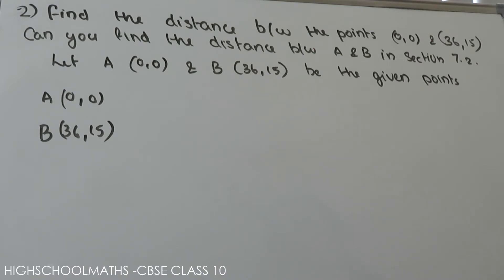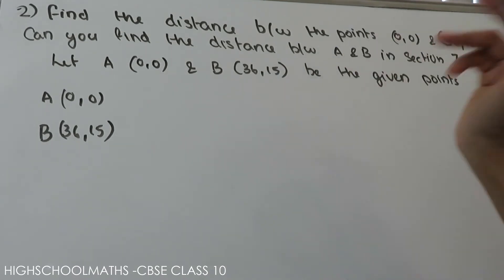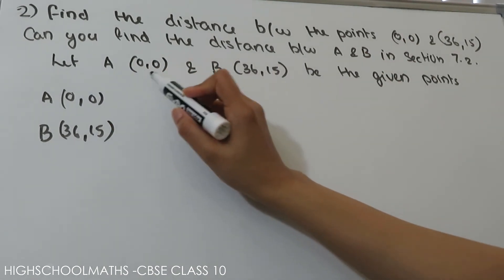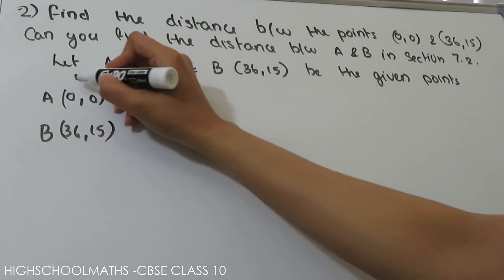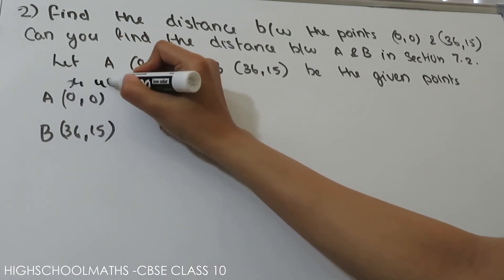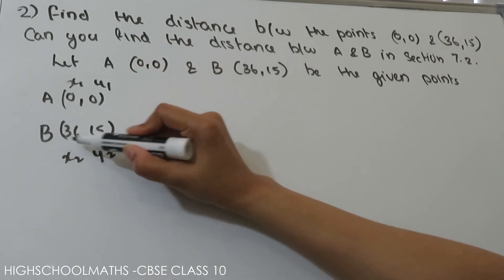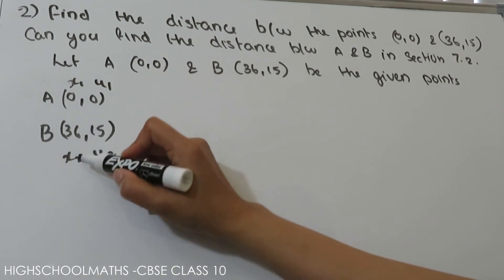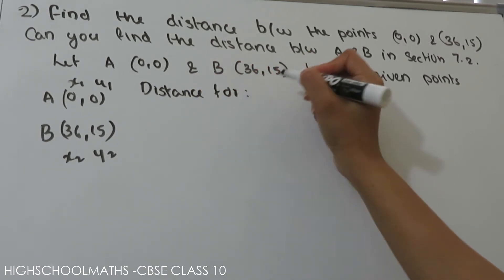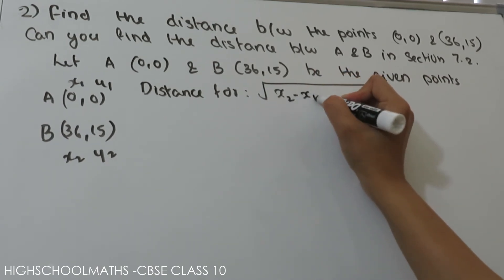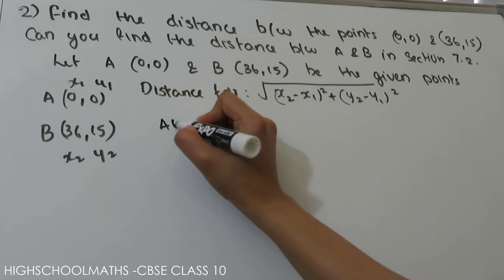Question number 2: Find the distance between the points (0, 0) and (36, 15). Let A be (0, 0) and B be (36, 15) as the given points. Assign x1 equals 0, y1 equals 0, x2 equals 36, y2 equals 15. Let's use the distance formula. The distance AB equals square root of (x2 minus x1) whole square plus (y2 minus y1) whole square.